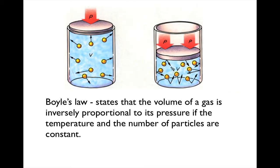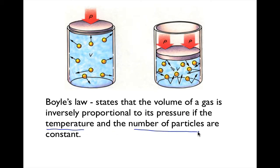Boyle's Law states that the volume of a gas is inversely proportional to its pressure if the temperature and number of particles are constant. So if temperature and number of particles do not change, then volume and pressure have an inverse relationship. That means if volume goes up, pressure goes down, and if volume goes down, pressure goes up.